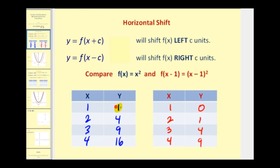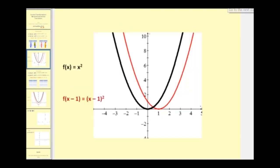Comparing the y values — 1, 4, and 9 — notice that for f of x minus 1, we have to increase x by 1 to get the same y value. When we increase x by 1, we're shifting the function to the right. So when we subtract a number from x, it moves right, and when we add a value to x, it shifts left. Looking at the graph, any corresponding point on the translated function is 1 unit to the right.